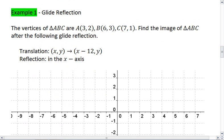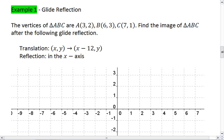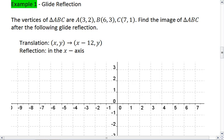Let's look at an example. You're given the vertices of triangle ABC are A at (3, 2), B at (6, 3), and C at (7, 1). I want you to find the image of triangle ABC after the following glide reflection.